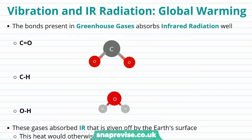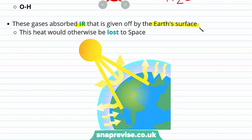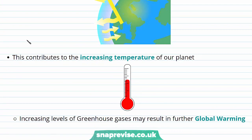Vibration and infrared radiation are involved in global warming. The bonds present in greenhouse gases such as carbon dioxide, methane, and water vapour all absorb infrared radiation well. Carbon dioxide is one of the most significant man-made greenhouse gases, whilst water vapour is one of the most significant naturally occurring greenhouse gases. These gases absorb infrared radiation given off by the Earth's surface — heat that would otherwise be lost to space. However, increasing levels of greenhouse gases contribute to the increasing temperature of our planet and may result in further global warming.